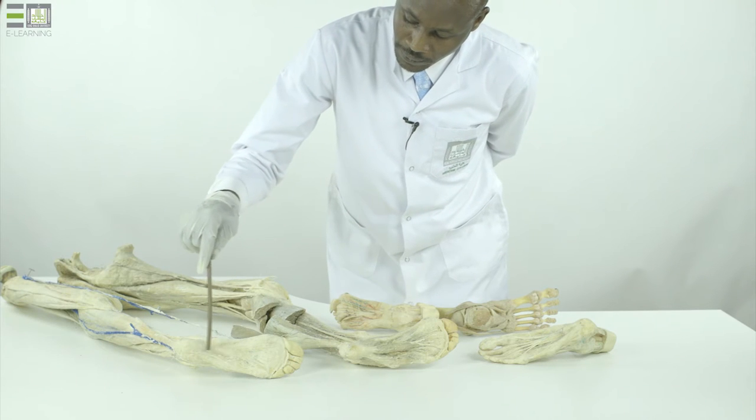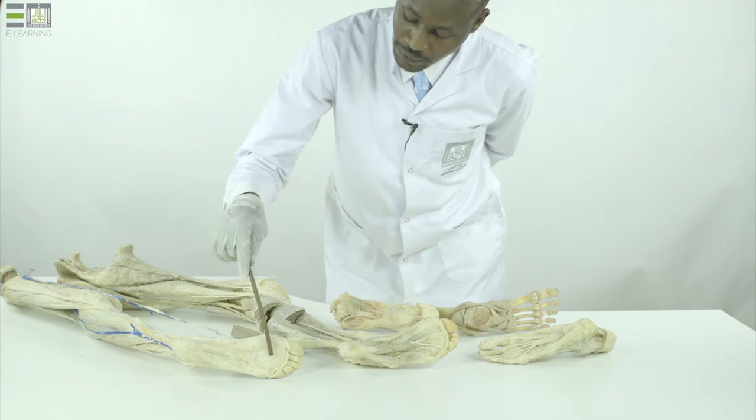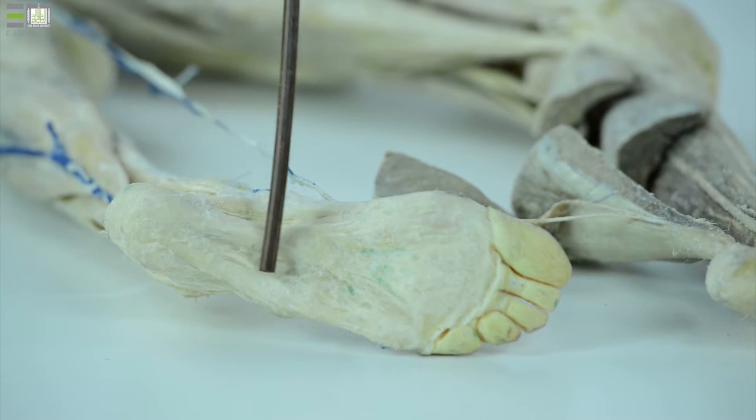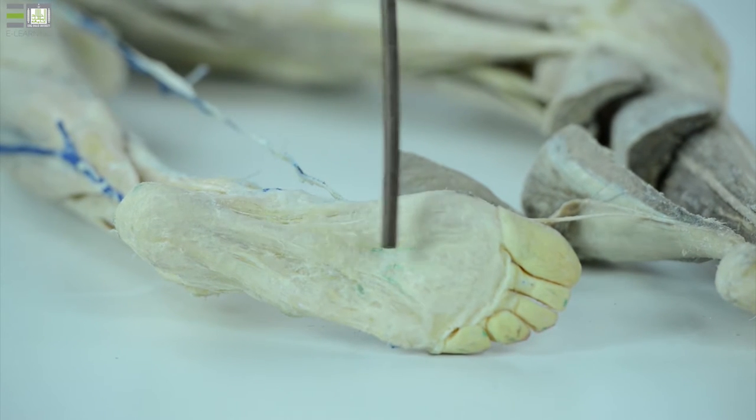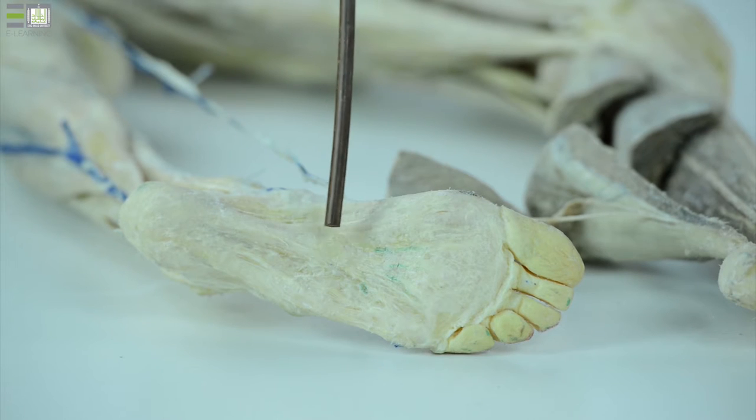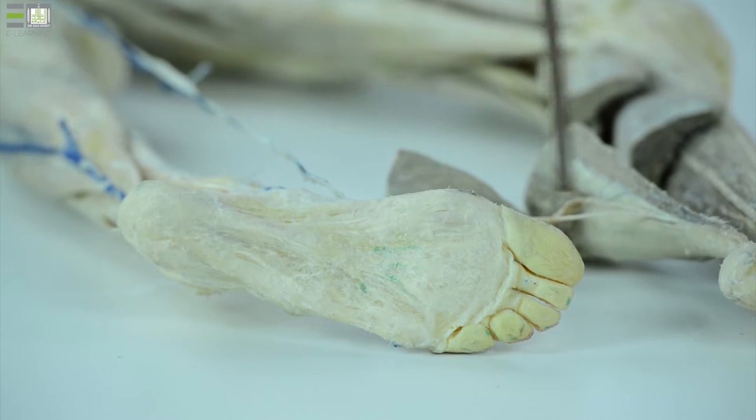The plantar surface of the foot under the skin is the thickening of the fascia forming the plantar aponeurosis. Below it, the muscles of the foot are arranged in four layers: first, second, third, and fourth layer.